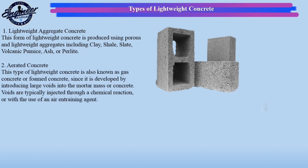Type 2: Aerated concrete. This type of lightweight concrete is also known as gas concrete or foamed concrete, since it is developed by introducing large voids into the mortar mass or concrete. Voids are typically injected through a chemical reaction or with the use of an air entrainment agent.